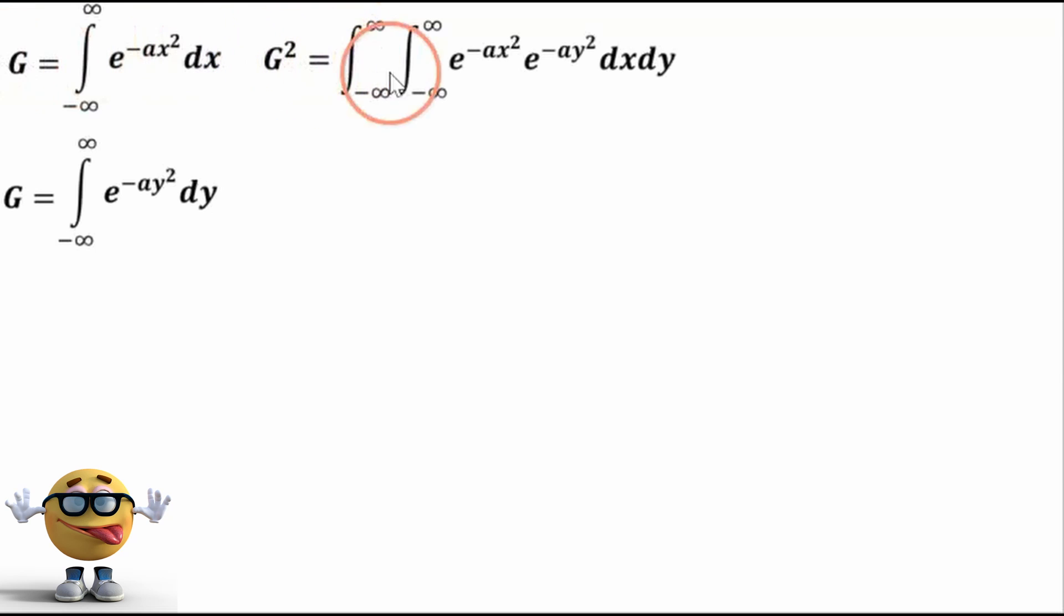Now, if we square g, g squared, it's the same as multiplying both integrals together. So that's what we did right here. And we can clean it up by giving it just one base.